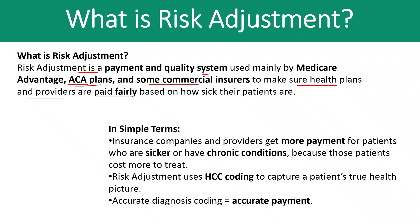If patients have any kind of disease, a cost estimation is made, also based on demographic factors. In simple terms, insurance companies and providers get more payment for patients who are sicker or have chronic conditions, because those patients cost more to treat. The funding allocation is determined based on the severity of the disease. Risk adjustment uses HCC coding to capture the patient's true health picture, which helps with proper risk adjustment methodology — accurate diagnosis coding equals accurate payment.